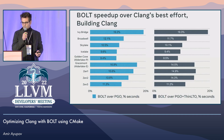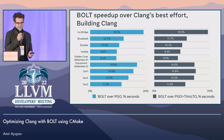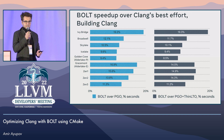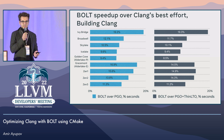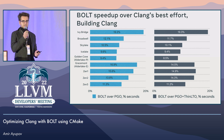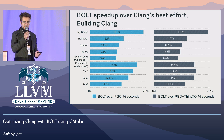I used those CMake caches to produce optimized Clang binaries, and those optimized binaries were used to build Clang — so a Bolt-optimized Clang build of Clang.